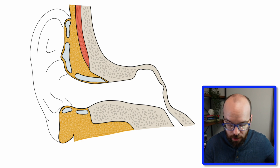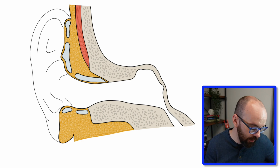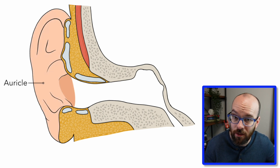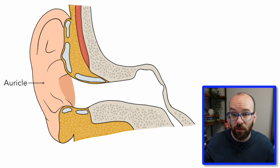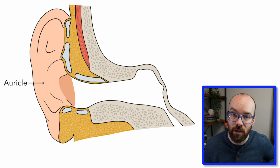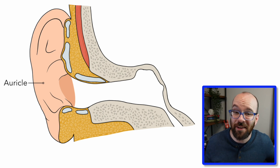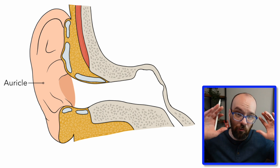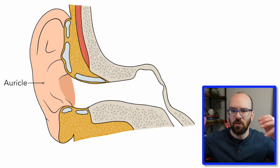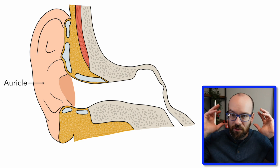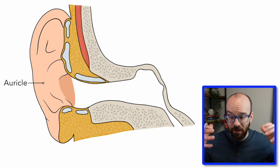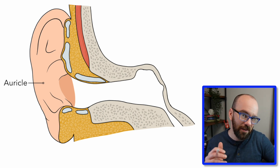Our first actual structure is called the auricle, also known as the pinna. The only function of it is to funnel sound waves down through the rest of the parts of the ear. If you think about it, it's kind of shaped like a funnel. It faces a little bit more forward and to the sides, so our ears are set up best for hearing things in front of us or from the sides.